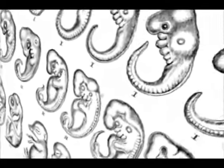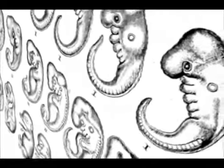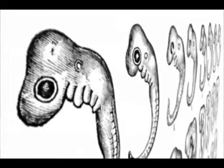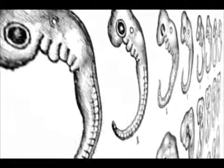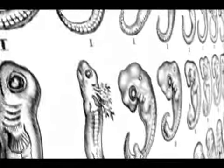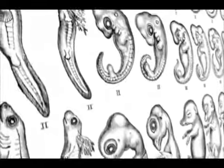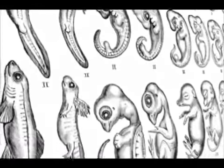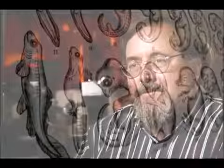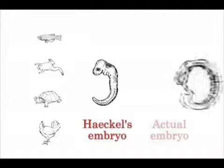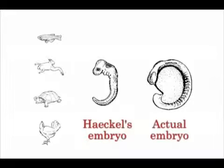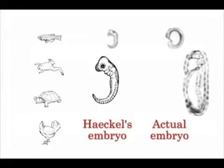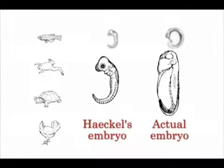Their early similarities showed that they came from a common ancestor, and differences arose only later. The problem is that he faked his drawings. The early vertebrate embryos don't really look that similar at all. The problem with Haeckel's drawings wasn't just that they were inaccurate — they were actually false in many cases.